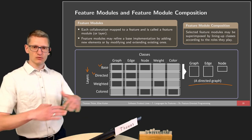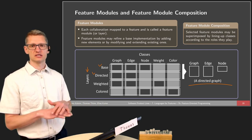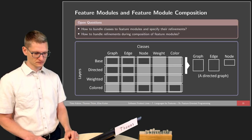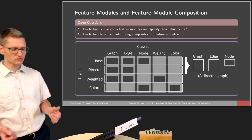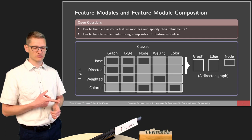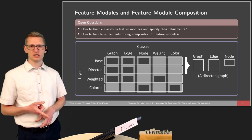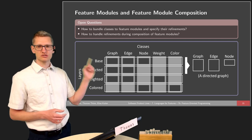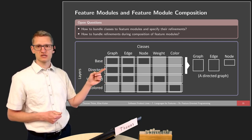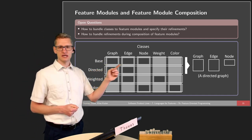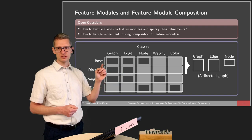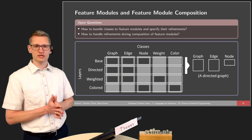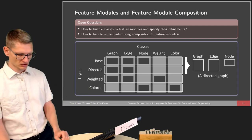We now have two open questions: how to bundle classes into feature modules and specify the refinements, and how to handle refinements during composition of feature modules. On one side, how do we decompose a single class into multiple parts and identify which roles are within the same collaboration? On the other side, once we've made our selection of features, collaborations, and layers, how can we compose them together?